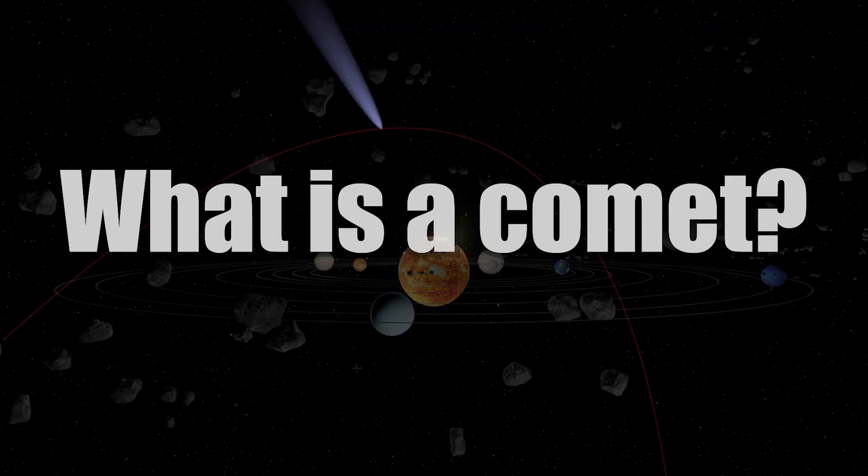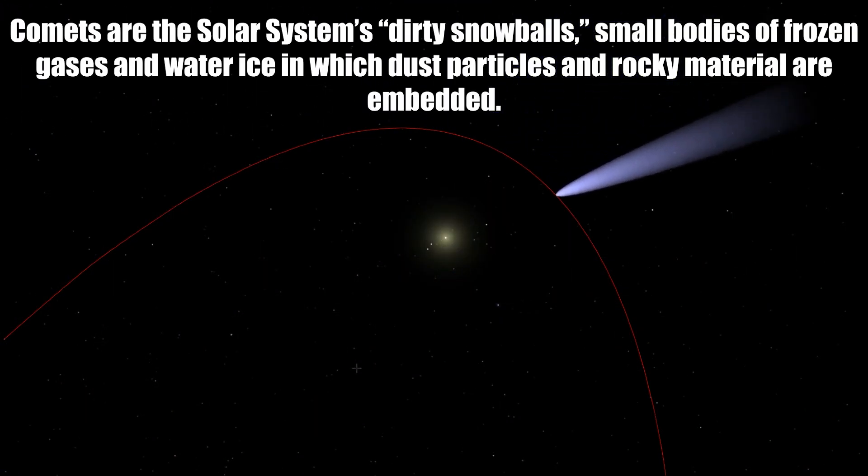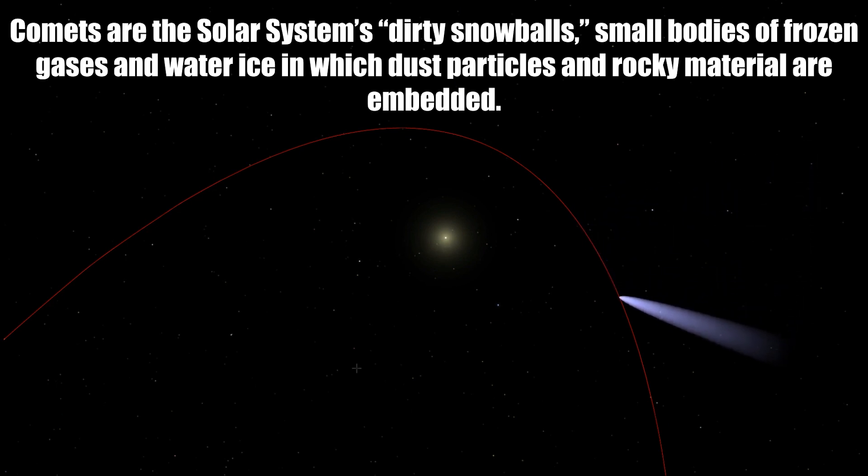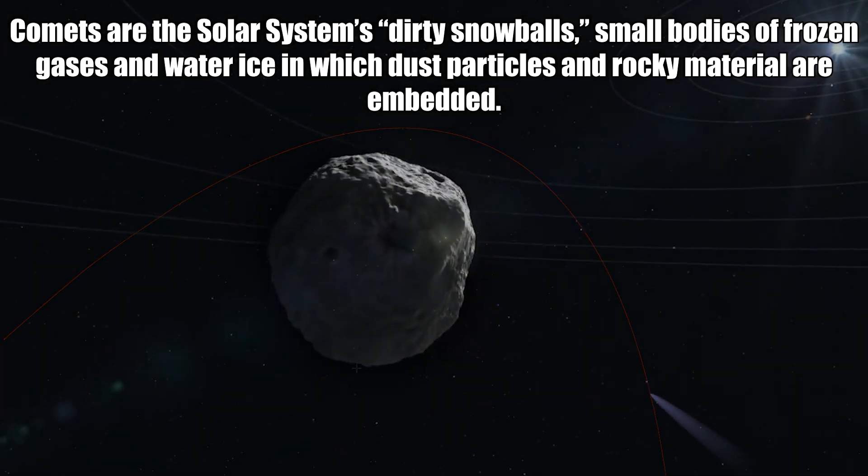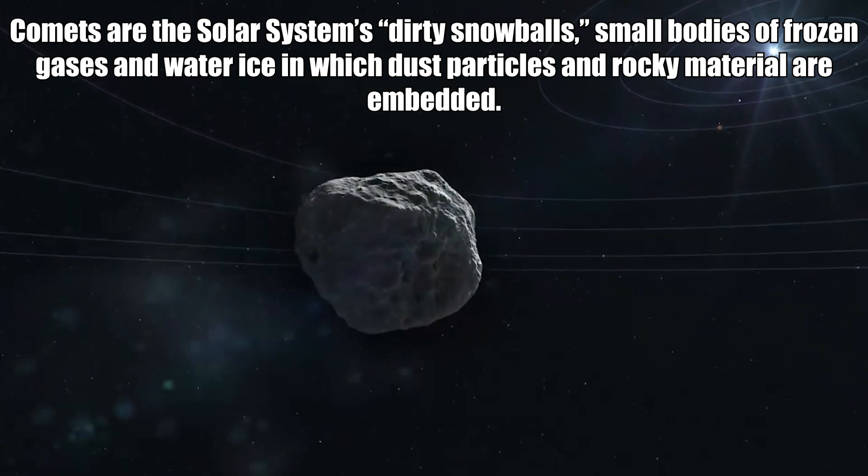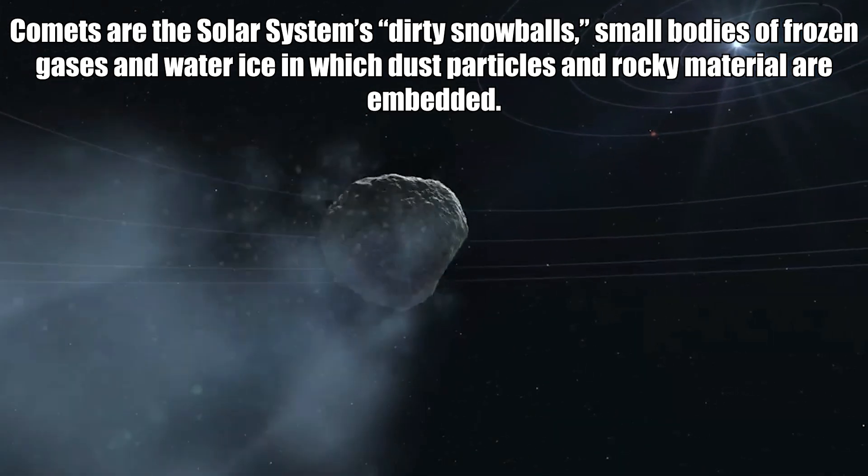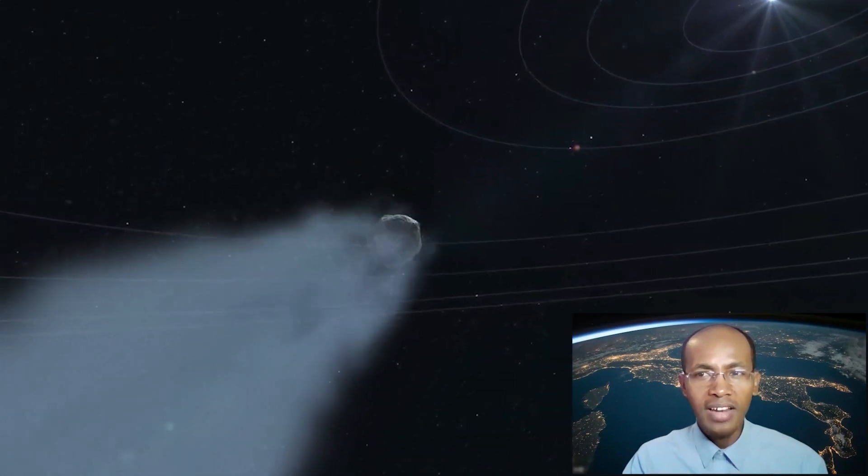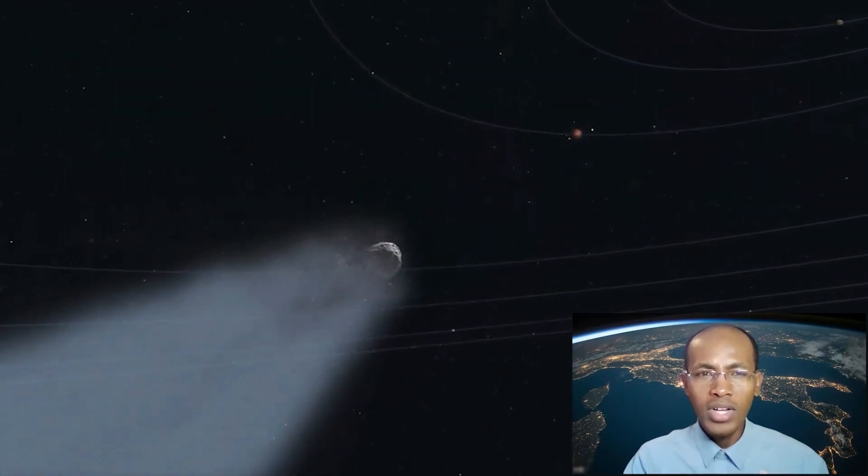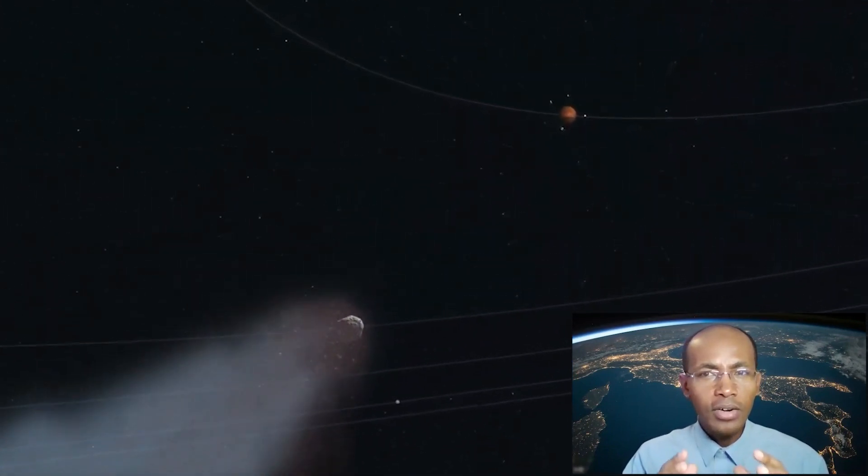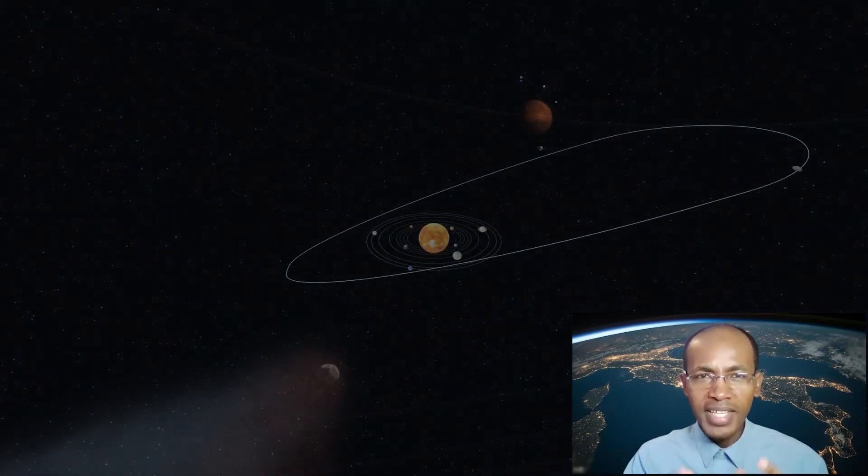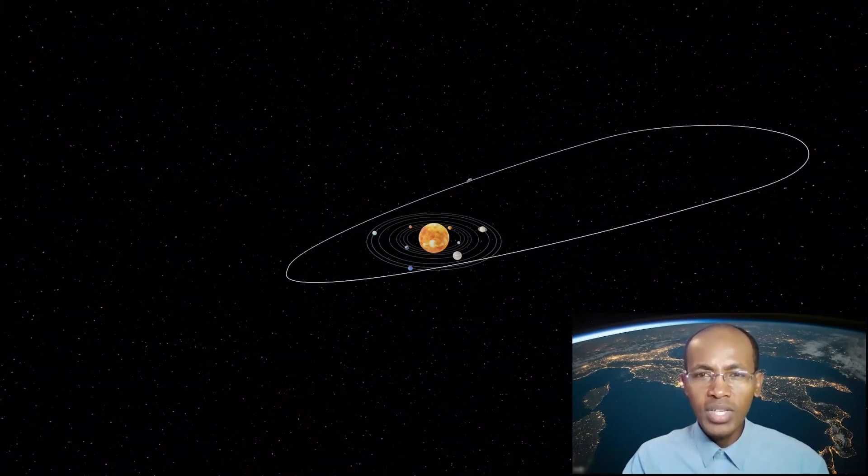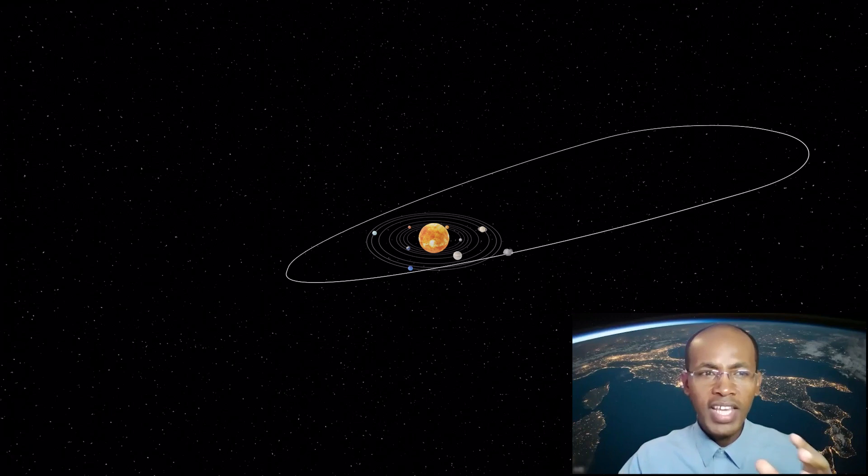Next question, what is a comet? Comets are the solar system's dirty snowballs, small bodies of frozen gases and water ice in which dust particles and rocky materials are embedded. A comet has a solid nucleus, usually around half a mile to 6 miles or 1 to 10 kilometers across. They orbit the sun much like the planets, except that comets usually swing very far from the sun and then very close to it in each orbit.